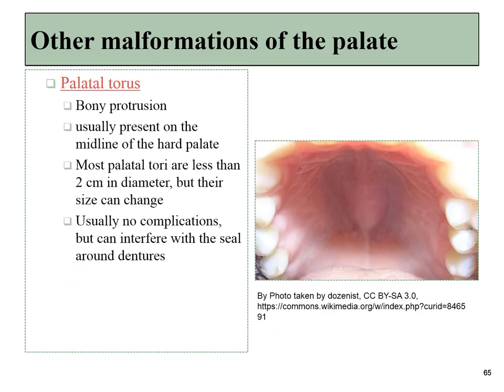A palatal torus is a change in the shape of the hard palate, usually a bump found along the midline. Many of them aren't very large and don't cause any problems, but they can change the shape of the hard palate, making it difficult to form a seal around dentures or a retainer.